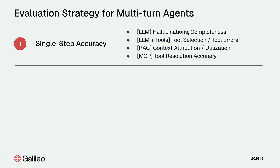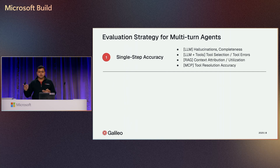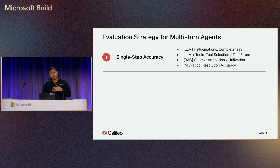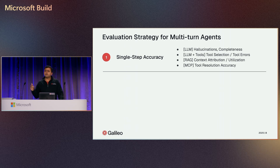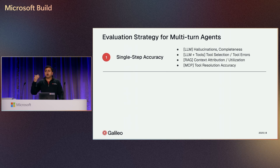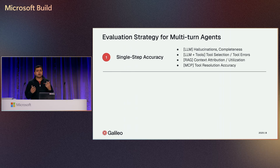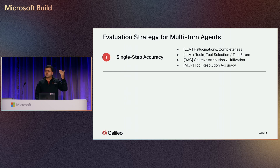First, let's look at single-step accuracy — the key metrics that are part of agentic evaluations. First, there's always going to be hallucinations and completeness. Completeness is an obvious metric — if I'm not fetching the right data and showing it to the end user as per the intent, it's going to be incomplete and a poor experience. Tool selection and tool errors: is the agent able to select the right tools as part of that planning phase, and if not, why? We've seen agents hallucinate on tool selection itself — sometimes calling the same tool twice instead of calling multiple different tools. Context attribution and utilization is a RAG-based metric. And then there's tool resolution accuracy — especially for MCP-style paradigms, is the tool being called in an MCP server resolved to the right tool in the system and calling the right URL?